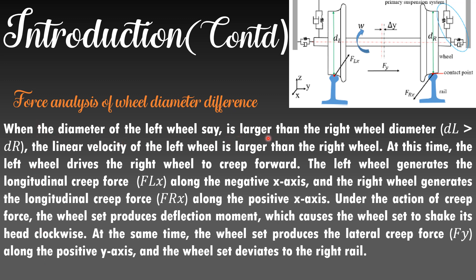When the diameter of the left wheel is larger than the right wheel diameter, the linear velocity of the left wheel is larger than the right wheel. At this time, the left wheel drives the right wheel to creep forward. The left wheel generates longitudinal creep force FLX along the negative x-axis and the right wheel generates the longitudinal creep force FLX along the positive x-axis. Under the action of creep force, the wheel set produces a deflection moment which causes the wheel set to shake its head clockwise.